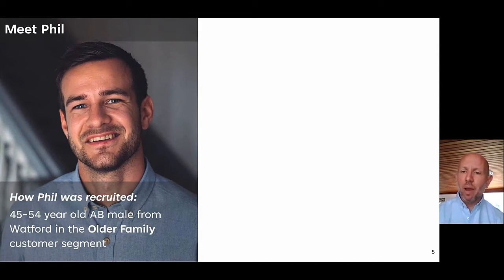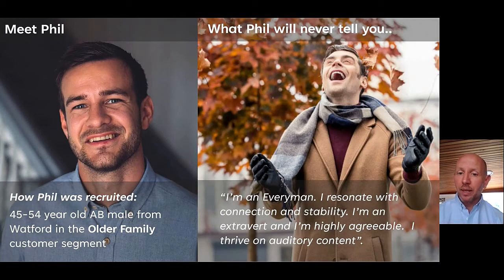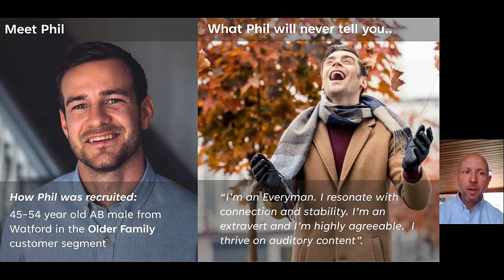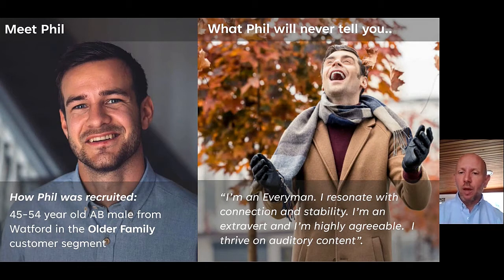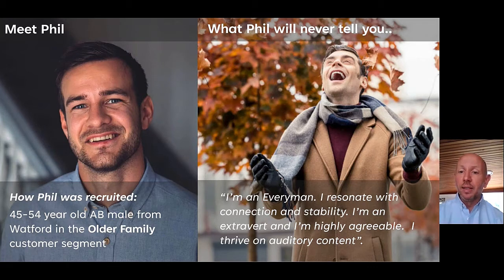What might Phil never tell us? Phil might never say: 'I'm an everyman. I resonate with connection and stability. I'm an extrovert and I'm highly agreeable. I thrive on auditory content.' So you can see that Phil is actually very, very different from Keith. Whilst they look similar demographically, if you dig below the surface into subconscious markers, they are very different — and those differences drive different mindsets, preferences, and behaviours.